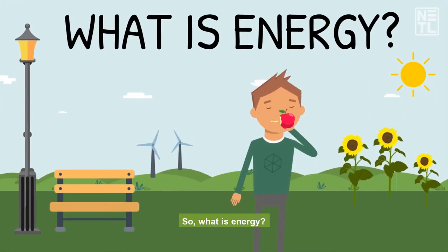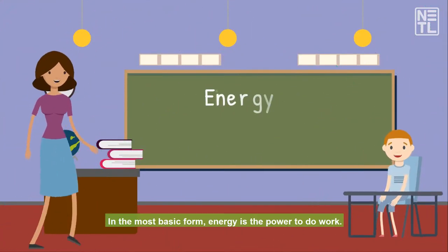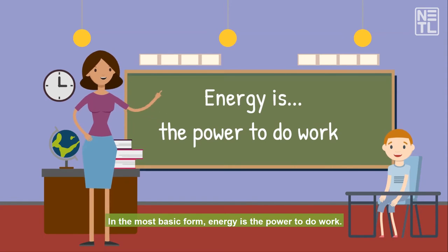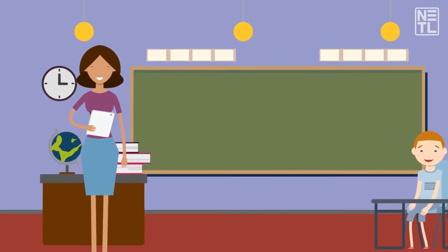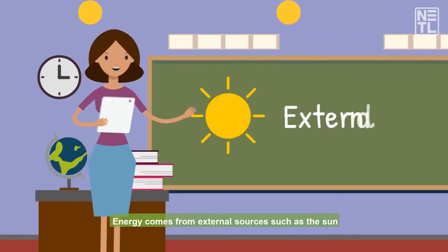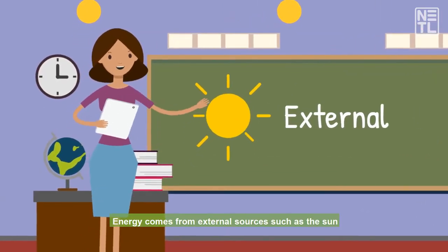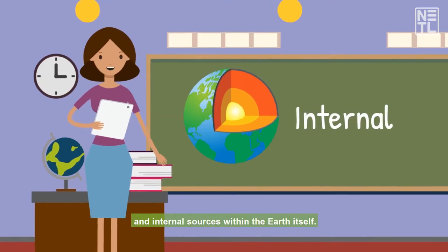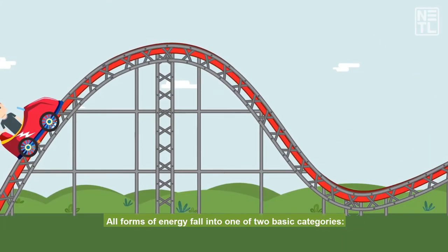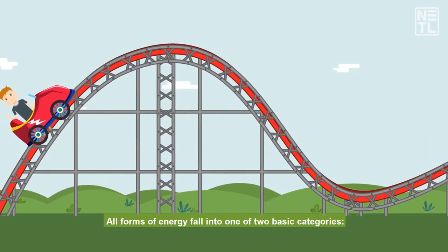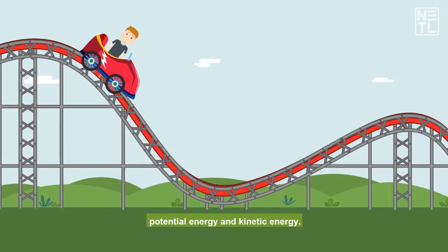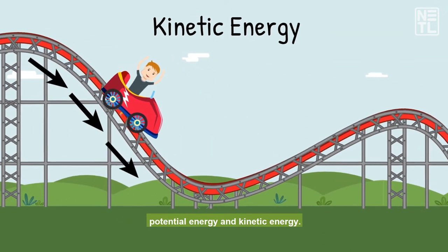So what is energy? In the most basic form, energy is the power to do work. Energy comes from external sources such as the Sun and internal sources within the Earth itself. All forms of energy fall into one of two basic categories: potential energy and kinetic energy.